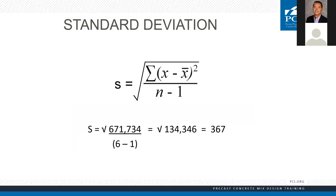Now we move on to the next line of the equation: 671,734 divided by n minus 1. N is the number of tests — here it's 6, so 6 minus 1 is 5. So it's 671,734 divided by 5, which gives us 134,346. Now we just figure out the square root of that number, which gives us 367. Our standard deviation is 367 — that's how much we can expect each individual mix to deviate from the average compressive strength.